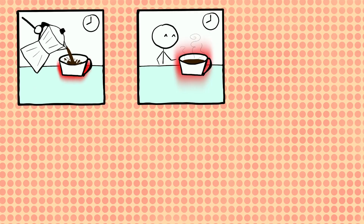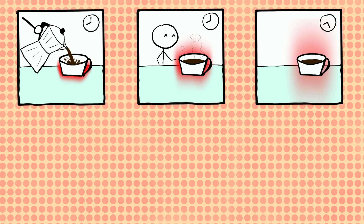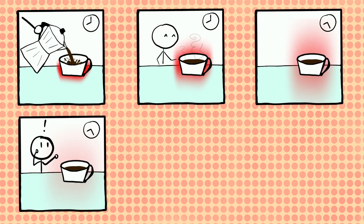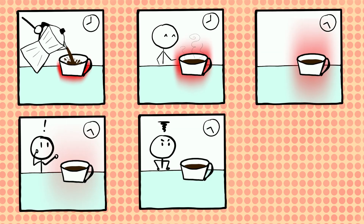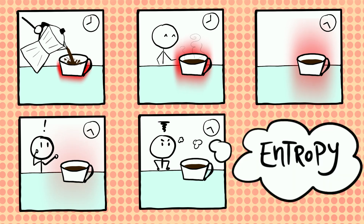You prepared a nice warm cup of coffee and you let it sit on your dining table. Now that you'd like to drink it, it's cold. It's definitely your fault, but there's a scientific concept you can also blame for it: entropy.